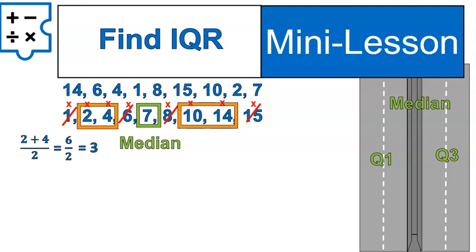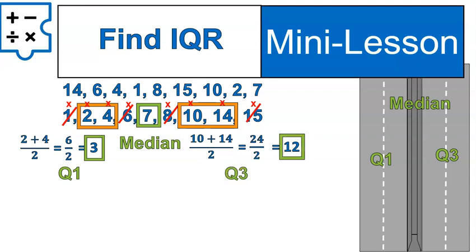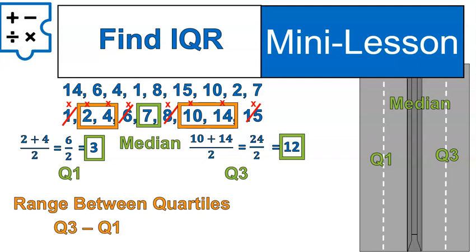So the quartile 1 is 3. Quartile 2 is 10 plus 14, which is 24 divided by 2. It's 12. That's quartile 3. And then we find the interquartile range by subtracting 12 minus 3, which gives us 9.